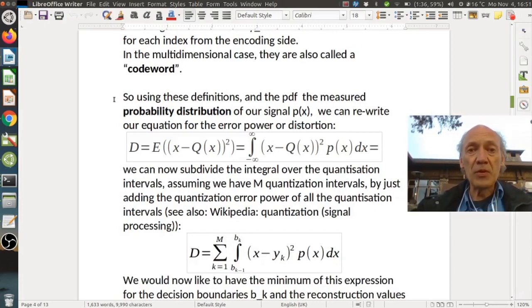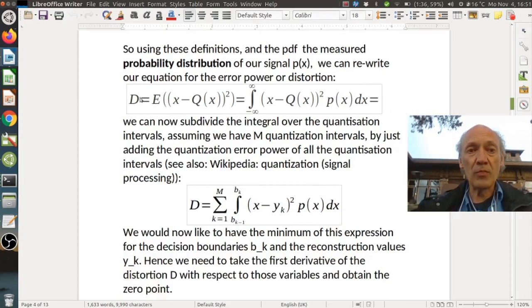So using these definitions and the pdf, the measured probability distribution of our signal p(x), we can rewrite our equation for the error power or distribution, as you can see here. So here we have the distortion, which is the expectation of (x - Q(x))^2. And now we assume that we know the probability distribution of x. And then we can compute this expectation using this integral over all possible values of this quantization error times the probability of x. So basically this is simply the definition of expectation.